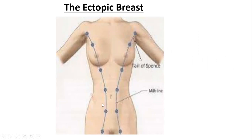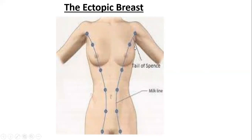If breast tissue develops at any place other than the anterior chest wall, it is called ectopic breast — because ectopic means growth of tissues somewhere other than their natural place. The natural location of breast tissue is the anterior chest wall, but if it grows near the axilla, inguinal region, or abdomen, it is termed ectopic breast.